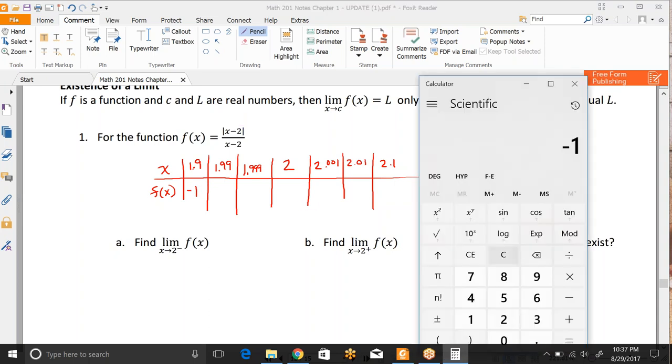So let's do 1.99. So 1.99 minus 2 for the top. And remember, absolute value would turn that back into a positive. And we'll divide that by 1.99 minus 2. So just plugging it into the function. And notice this also comes out to negative 1. And if you plug in 1.999, it also comes out to negative 1.